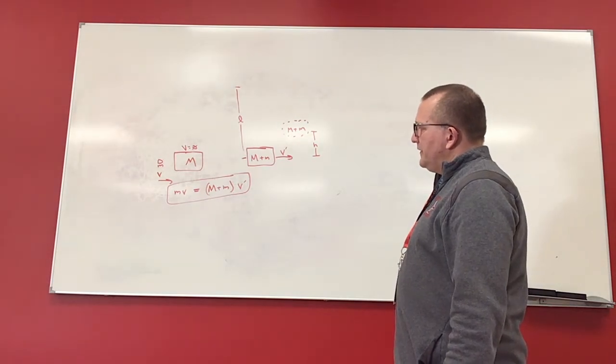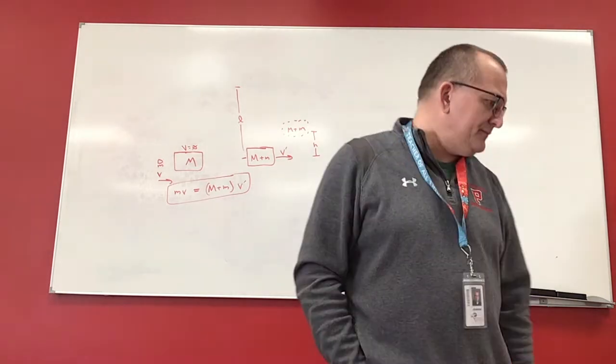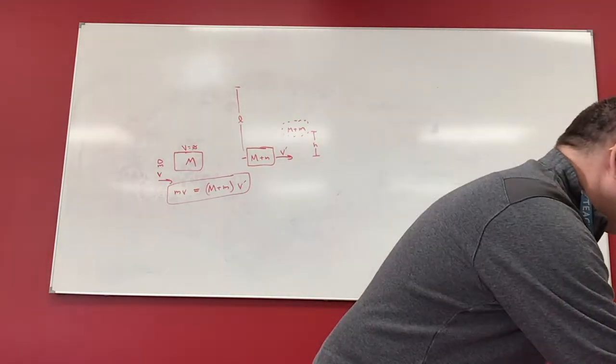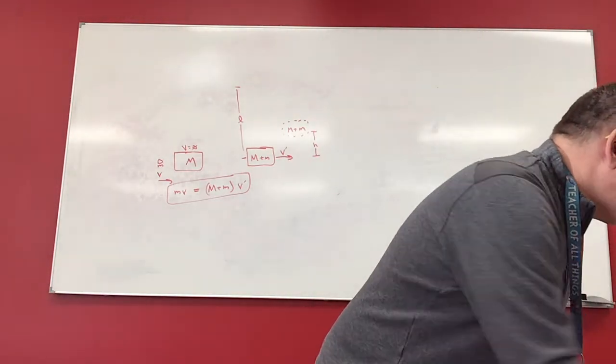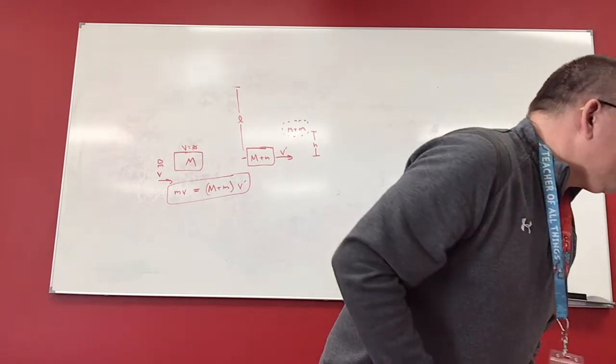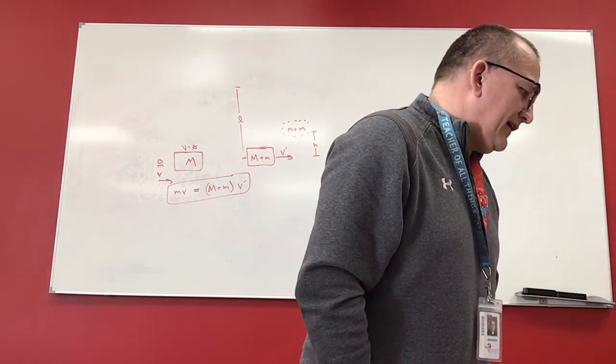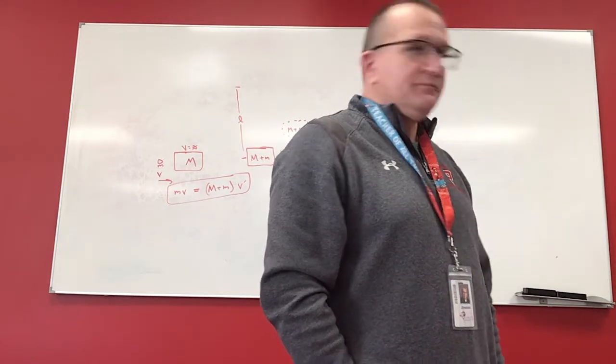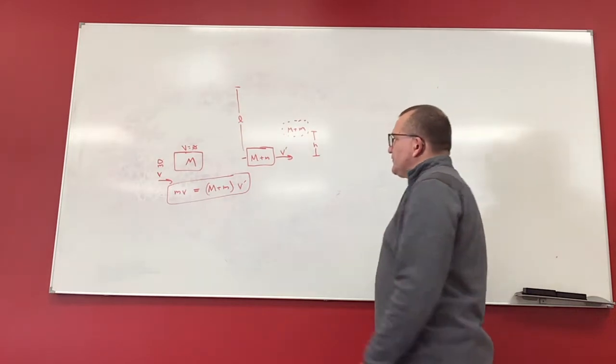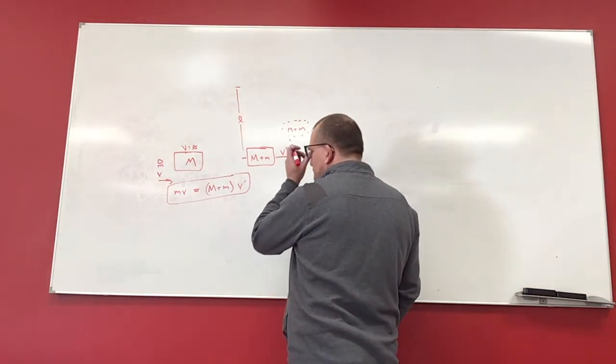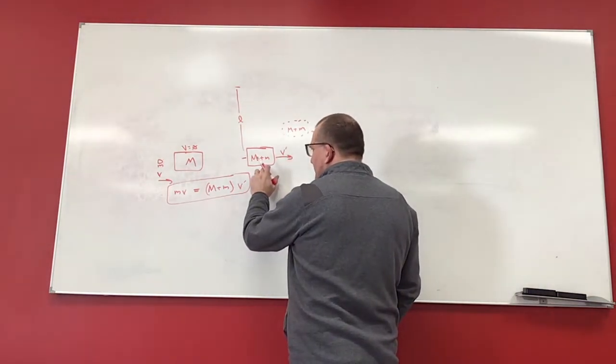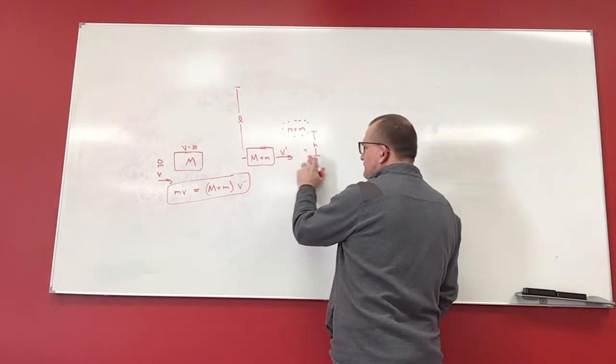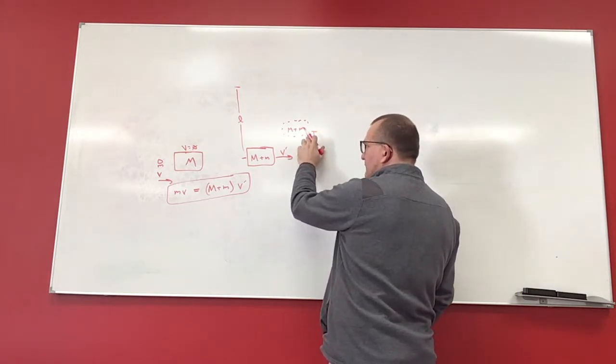And then part B is asking the relationship between the initial speed, so V, and the height, H. So let's look at energy. Energy is conserved. So what happens is I have this thing moving, and it's at ground level zero, and it's going to rise to this height where it's going to stop moving.